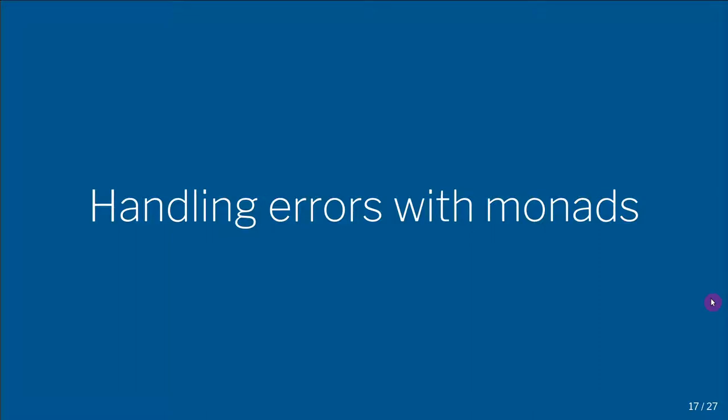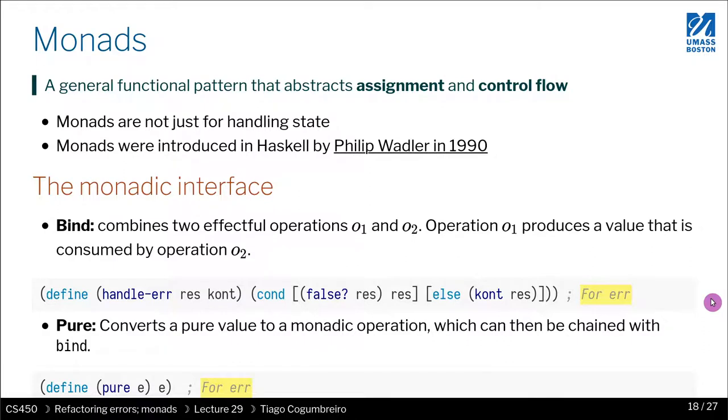We saw how to handle state mutation with monads, and now what we're seeing is handling errors with monads. So essentially our handle error function is just bind. It's telling us how to combine two effectful operations, where the effect here is not just the EFF struct, it's really the idea behind an exception, an error.